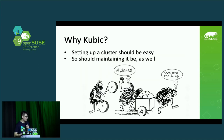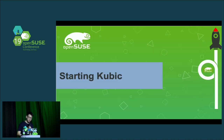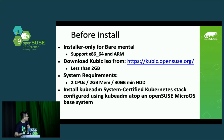Setting up a cluster is easy, but you should maintain it as well. Now your friends know about Kubic and they're lucky to use it! Before installing, you need a bare-metal machine — x86-64 or ARM. Download the Kubic ISO from the Kubic Wiki or the internet. The ISO is less than 2 gigabytes. The system requires just 2 CPUs, 2 gigabytes of memory, and 30 gigabytes of storage minimum. It's very small.